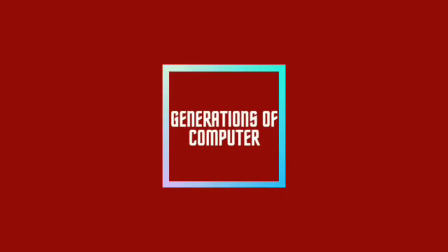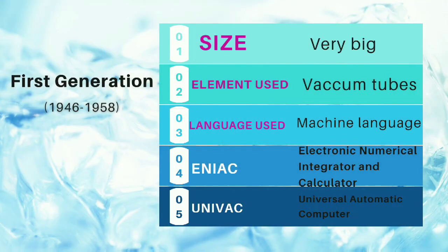Let us start with generations of computer. We have already studied about first generation in the previous session. The first generation started from 1946 and it ended in 1958. Those computers were very big in size because they used vacuum tubes, and vacuum tubes were big in size. The language used by first generation computers was machine language — only 0 and 1. The computers could understand only 0 and 1.